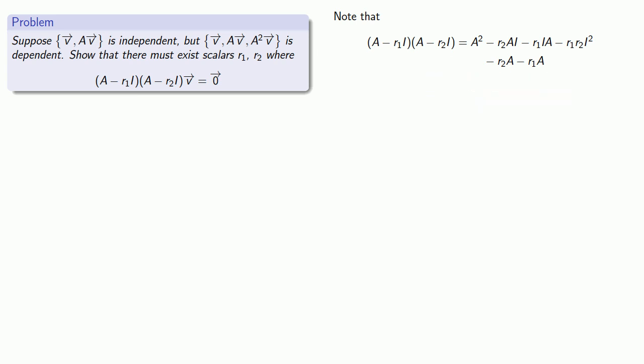But wait, there's more. This is I². Well, that's I times I. That's do nothing. And then do nothing. Well, that's really just the same as doing nothing. So this I² is just I.